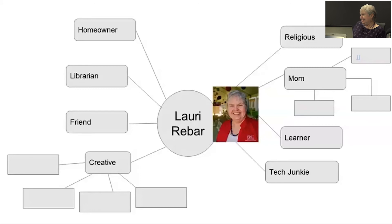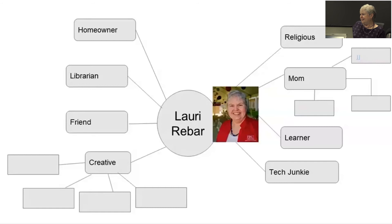A participant suggests a backwards mind map: you complete the map and have students explain the relationships. This is enthusiastically received — it's all about backwards design.